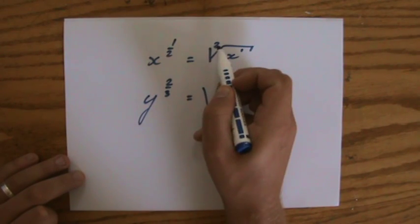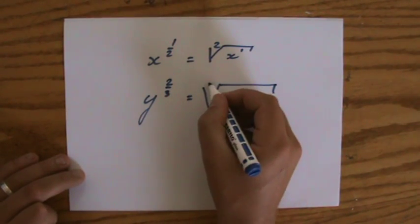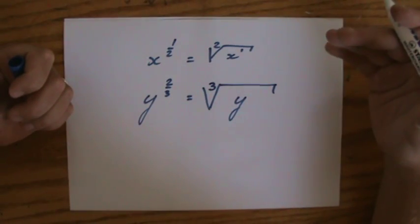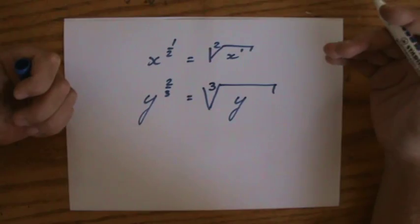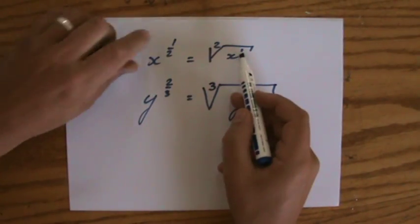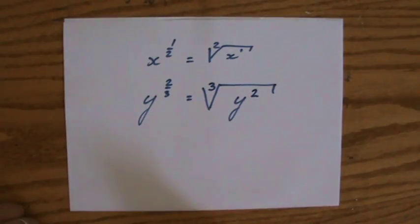the 2 goes into the root sign. So the denominator goes into the root sign. In this particular case, I'm talking about the third root. Not the square root, but the third root of y. Well, not to the power of 1, but the numerator, so y to the power of 2.